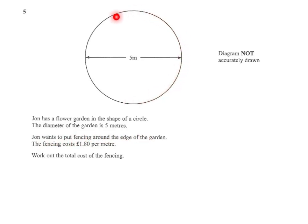So all the way around the circle, which we call the circumference. The fencing costs £1.80 per metre. Our task is to work out the total cost of the fencing.